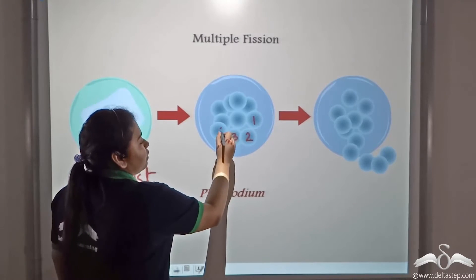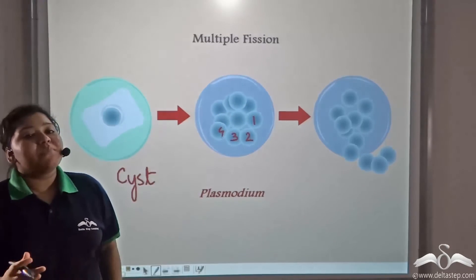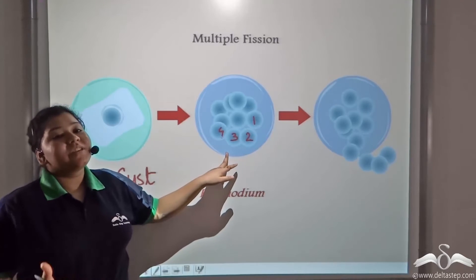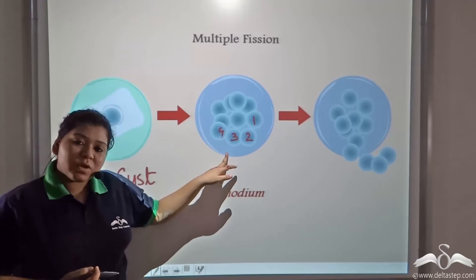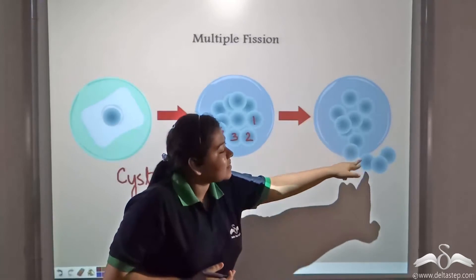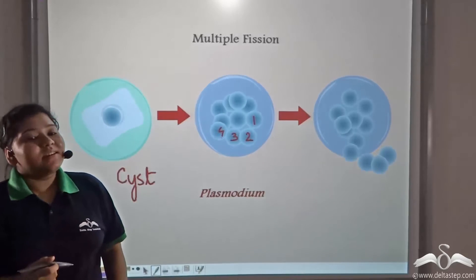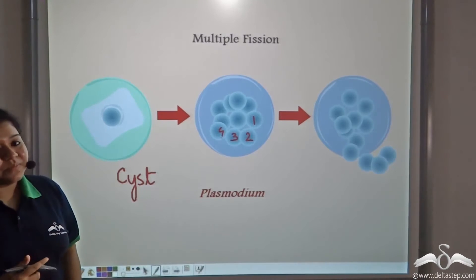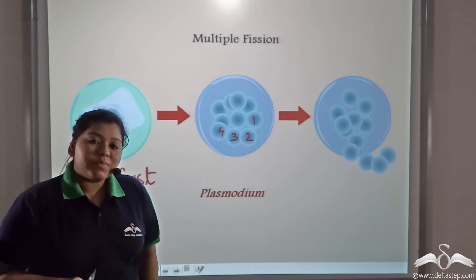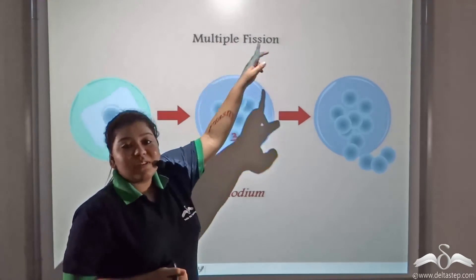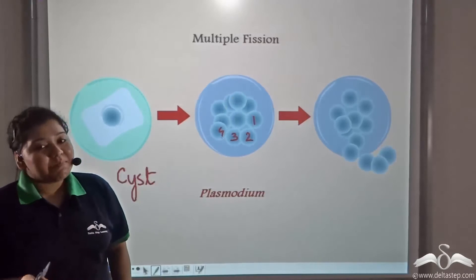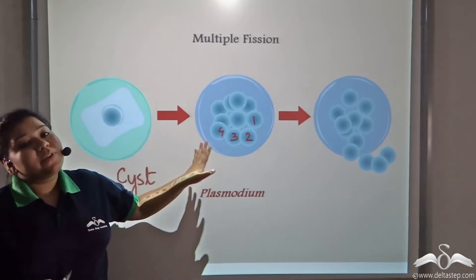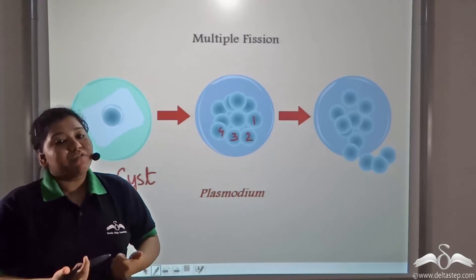There are multiple numbers of daughter cells that are formed — one, two, three, four, and so on. These cysts, on return of favorable climate, absorb water and burst open to release the daughter plasmodiums into the environment. These daughter plasmodiums grow up to form the adult plasmodium. This form of reproduction is known as multiple fission — multiple means many and fission means breakdown — so one plasmodium breaks down to form a number of plasmodiums.